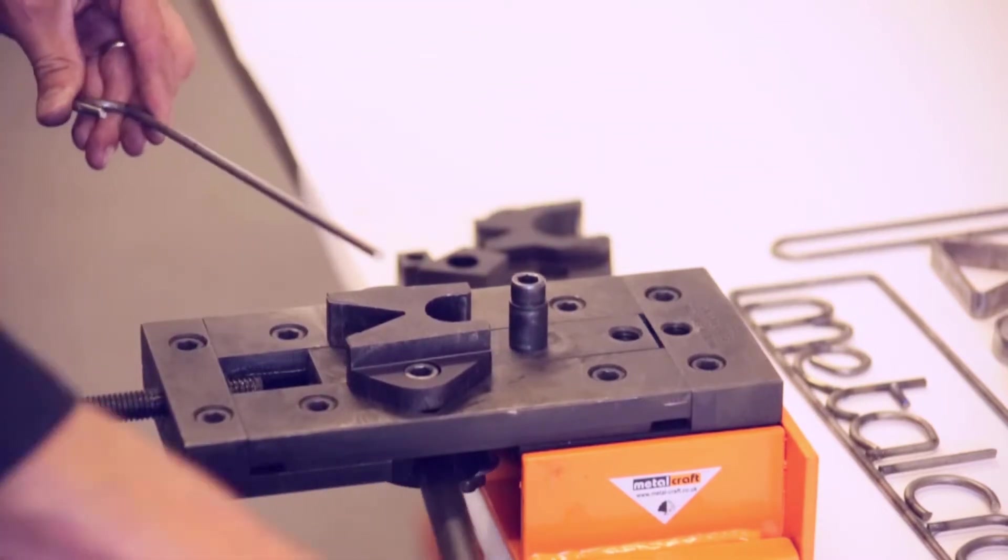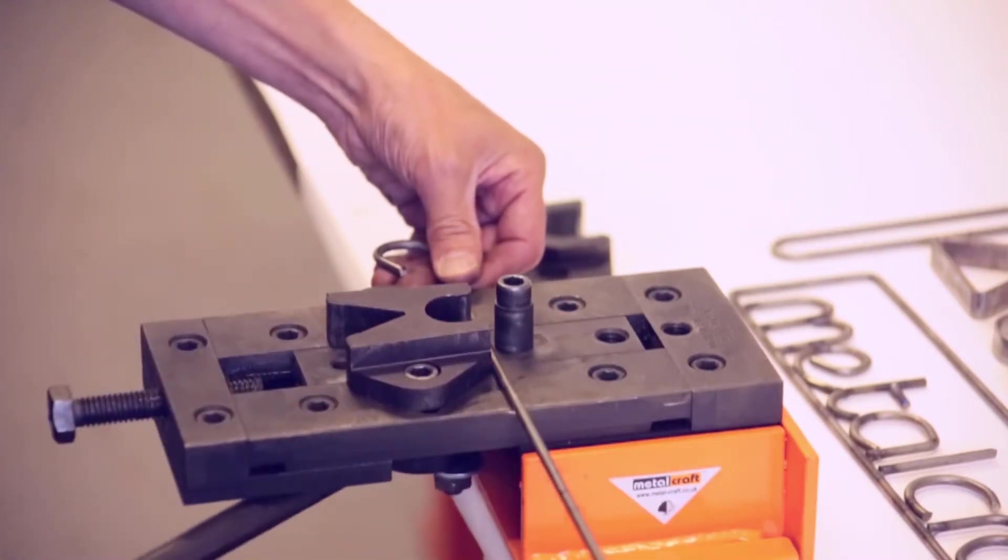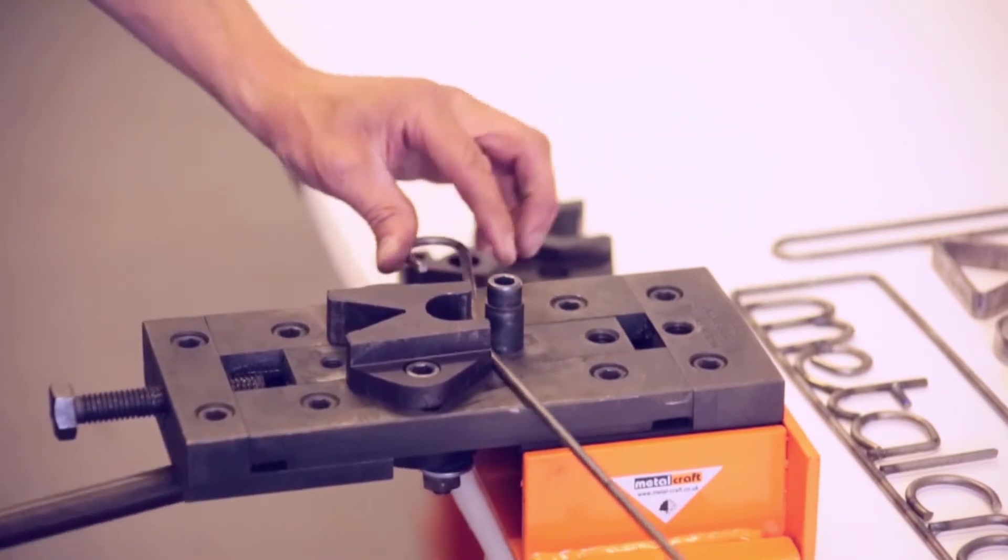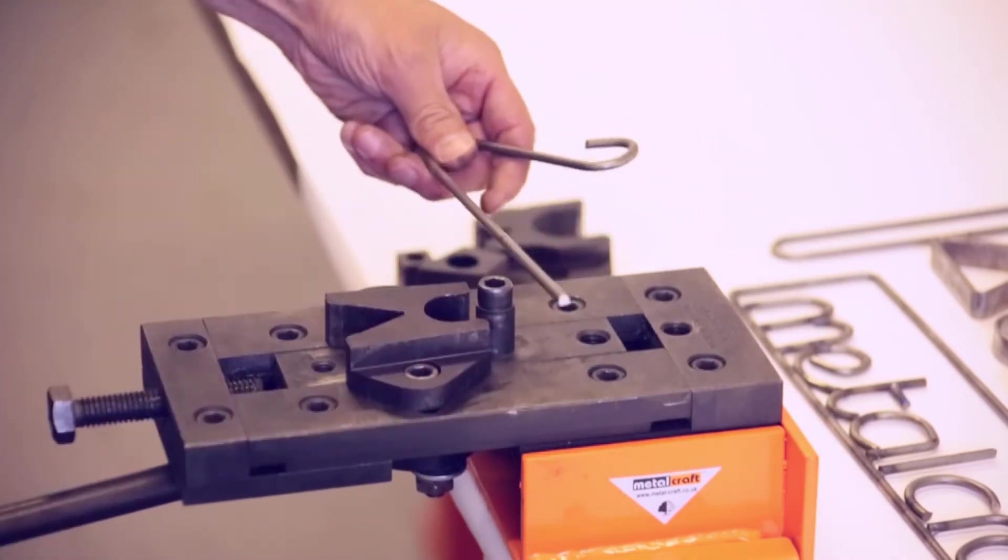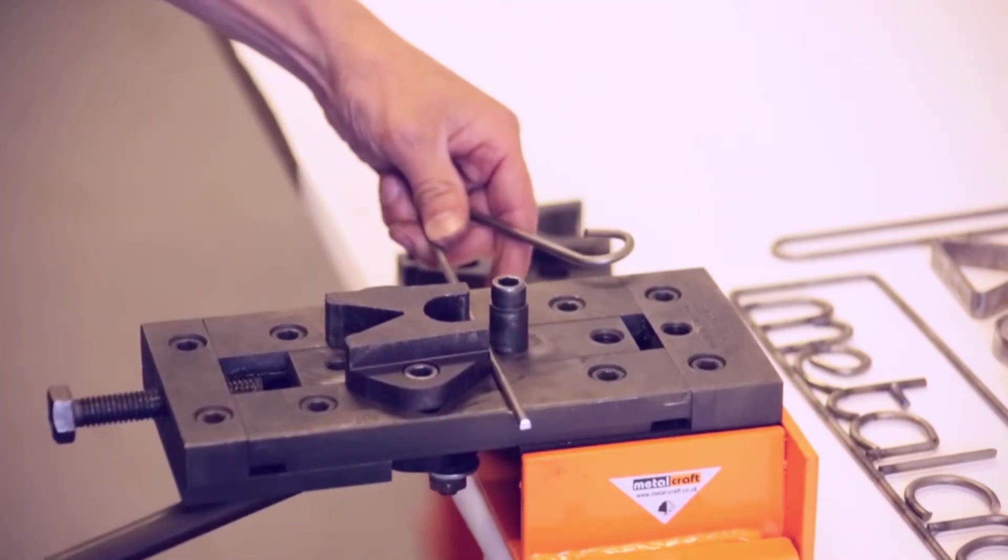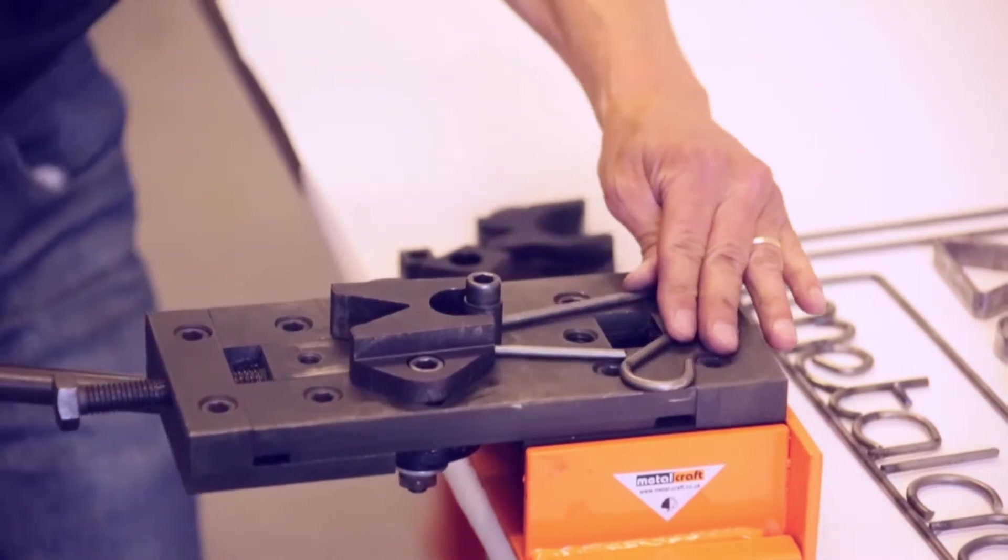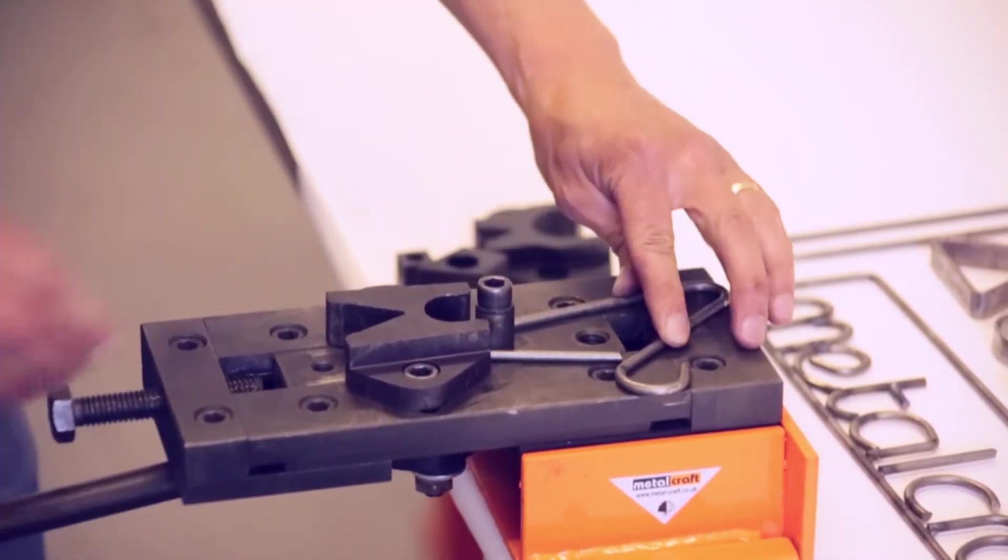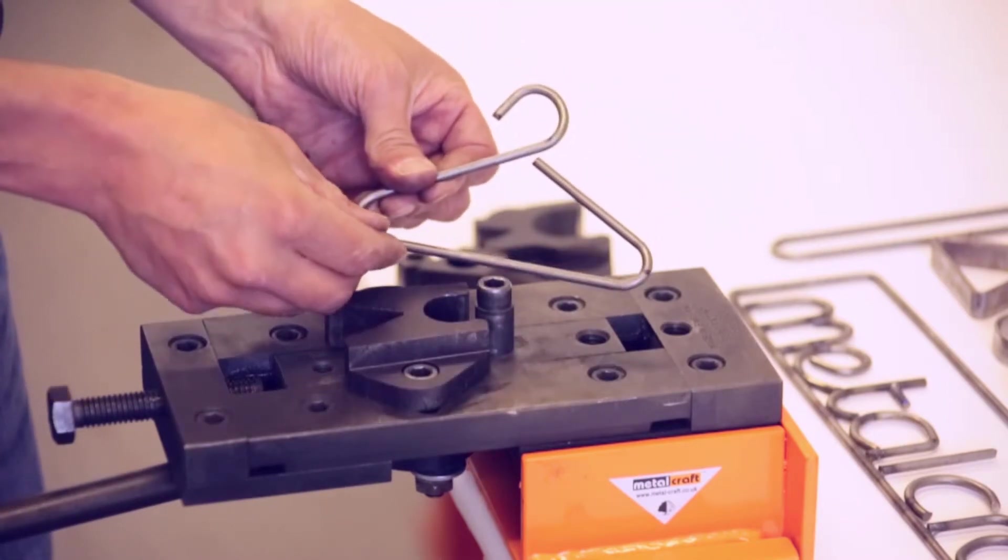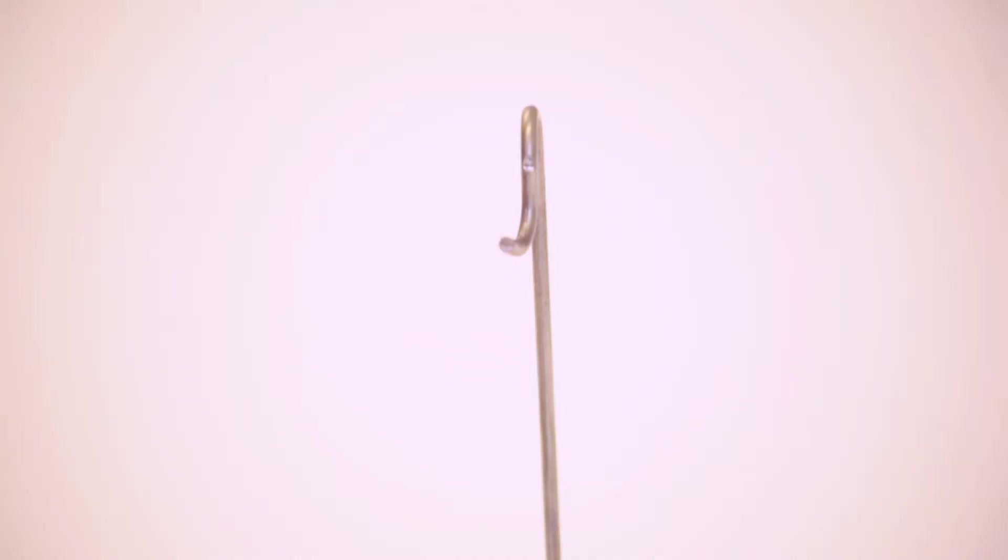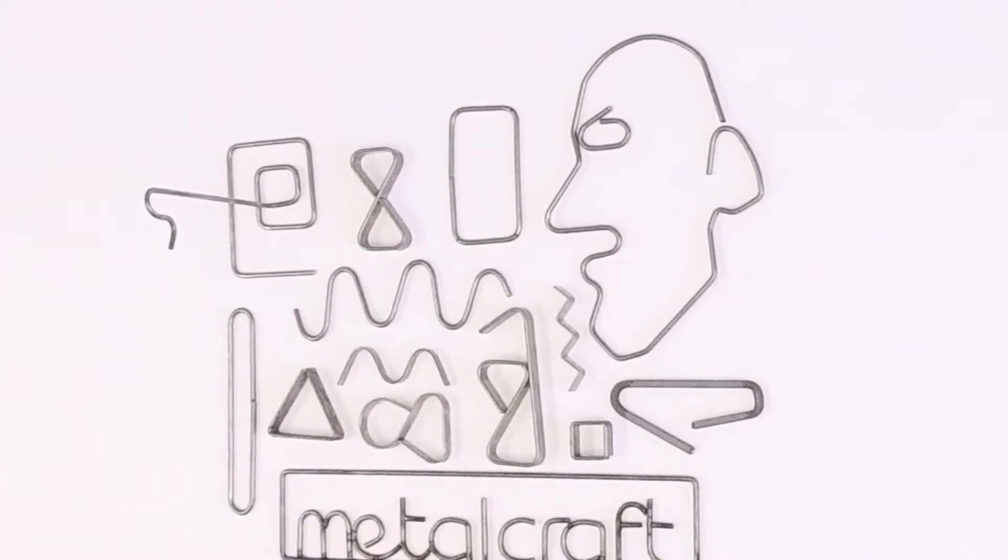However what sets this apart from the practical RBR tool is the special rounded bending head and dies which allow you to produce rounded bends as well as free-form shapes. All in all this optional extra increases the versatility of your master RBR tool immeasurably.